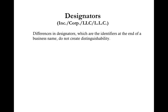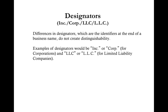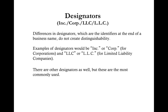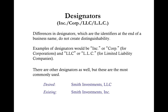Differences in designators — which are the identifiers at the end of a business name — do not create distinguishability. Examples of designators would be Inc. or Corp for corporations, and LLC or L.L.C. for Limited Liability Companies. For example, if your desired LLC name is Smith Investments LLC but during the search you found Smith Investments Inc., your desired LLC name would not be available for use. You would need an alternative name such as Smith Financial Group LLC.